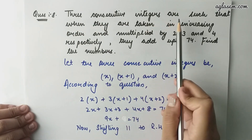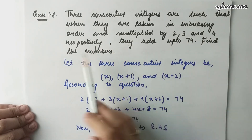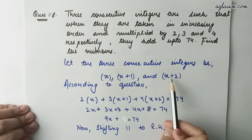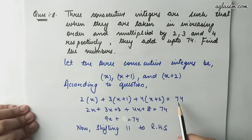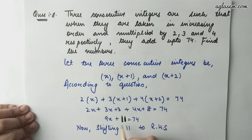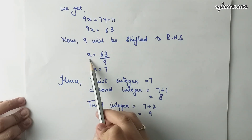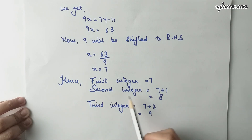Question number 8: Three consecutive integers are such that when taken in increasing order and multiplied by 2, 3, and 4 respectively, they add up to 74. Find the numbers. Let the three consecutive integers be x, x plus 1, and x plus 2. According to the question, 2 into x plus 3 into (x plus 1) plus 4 into (x plus 2) equals to 74. We get 2x plus 3x plus 3 plus 4x plus 8 equals to 74, giving 9x plus 11 equals to 74. Shifting 11 to RHS, we get 9x equals to 63, so x equals to 7. Hence, the integers are 7, 8, and 9.